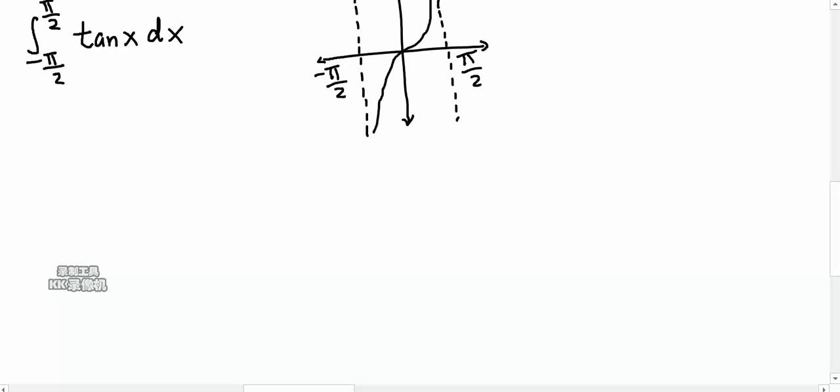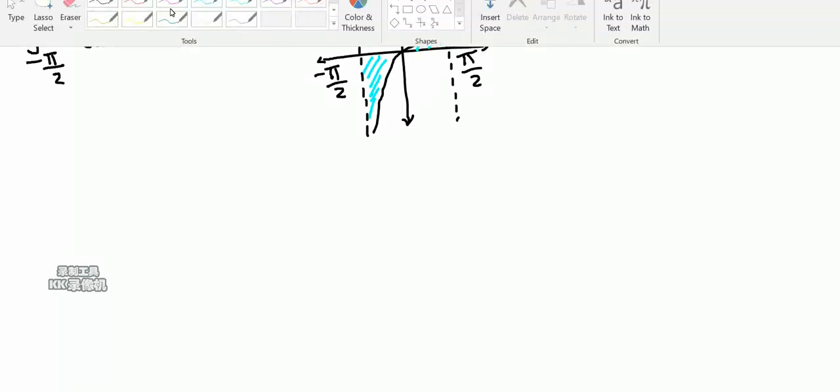So it looks something like that. We'll graph y equals tangent x, and we want to know what the area is right here. Obviously, this is going to be an improper integral, so let's break this up into two parts.